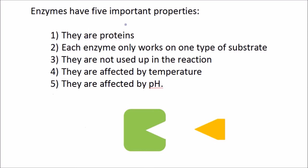Now enzymes have five important properties. Number one, they are proteins, so the enzyme is made of protein molecules. Number two, each enzyme only works on one type of substrate and that's because the active site has a very specific shape. The shape of the active site is specific to a particular substrate and only that substrate will fit. Number three, they're not used up in the reaction. Number four and five, they are affected by temperature and pH. Now we're going to focus on these two for the rest of the video and we're going to have a look at some graphs.